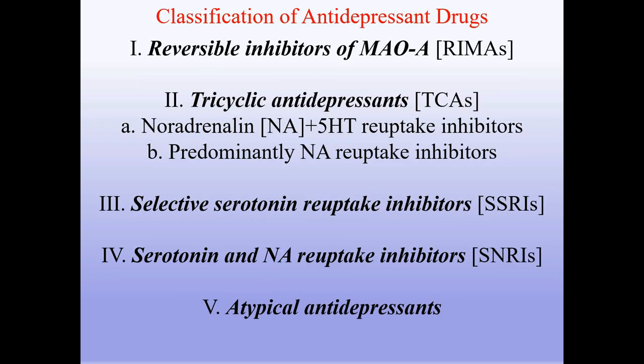Classification of antidepressant drugs. First, reversible inhibitors of monoamine oxidase A (RIMAs). Second, tricyclic antidepressants (TCAs), subdivided into noradrenaline and 5-HT reuptake inhibitors, and predominantly noradrenaline reuptake inhibitors. Third, selective serotonin reuptake inhibitors (SSRIs). Fourth, serotonin and noradrenaline reuptake inhibitors (SNRIs). Fifth, atypical antidepressants.